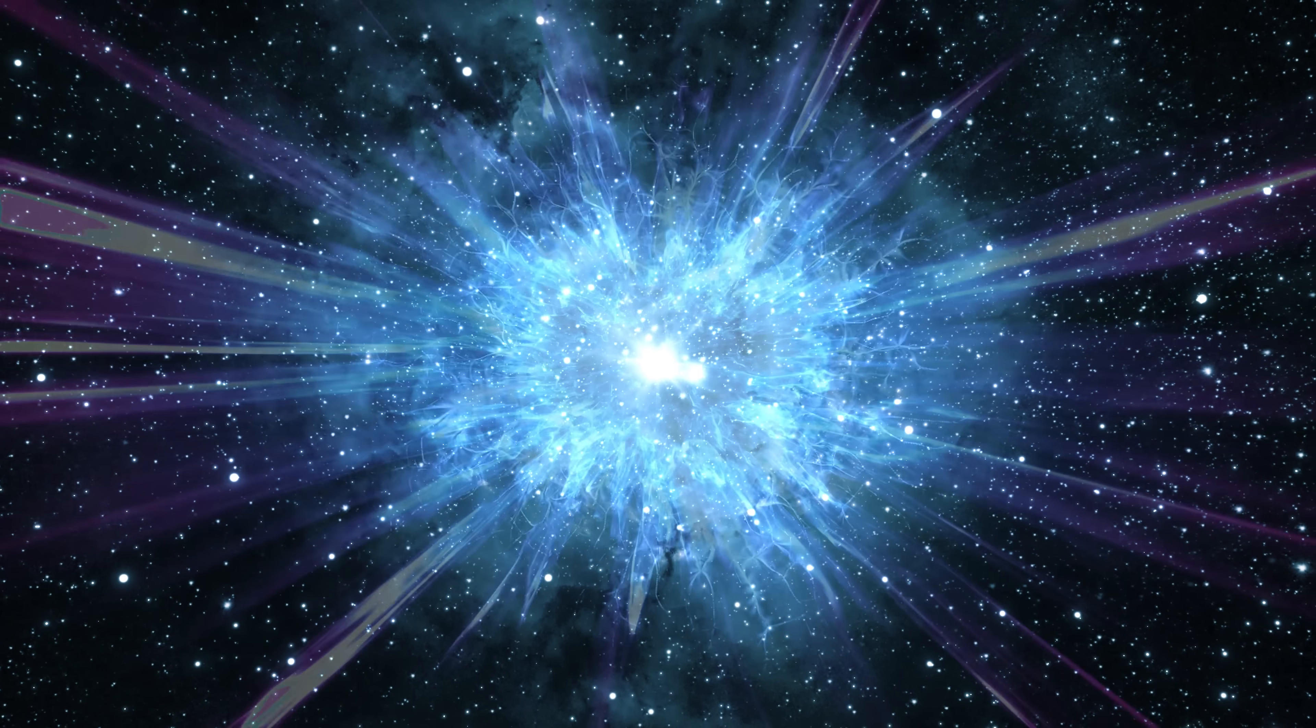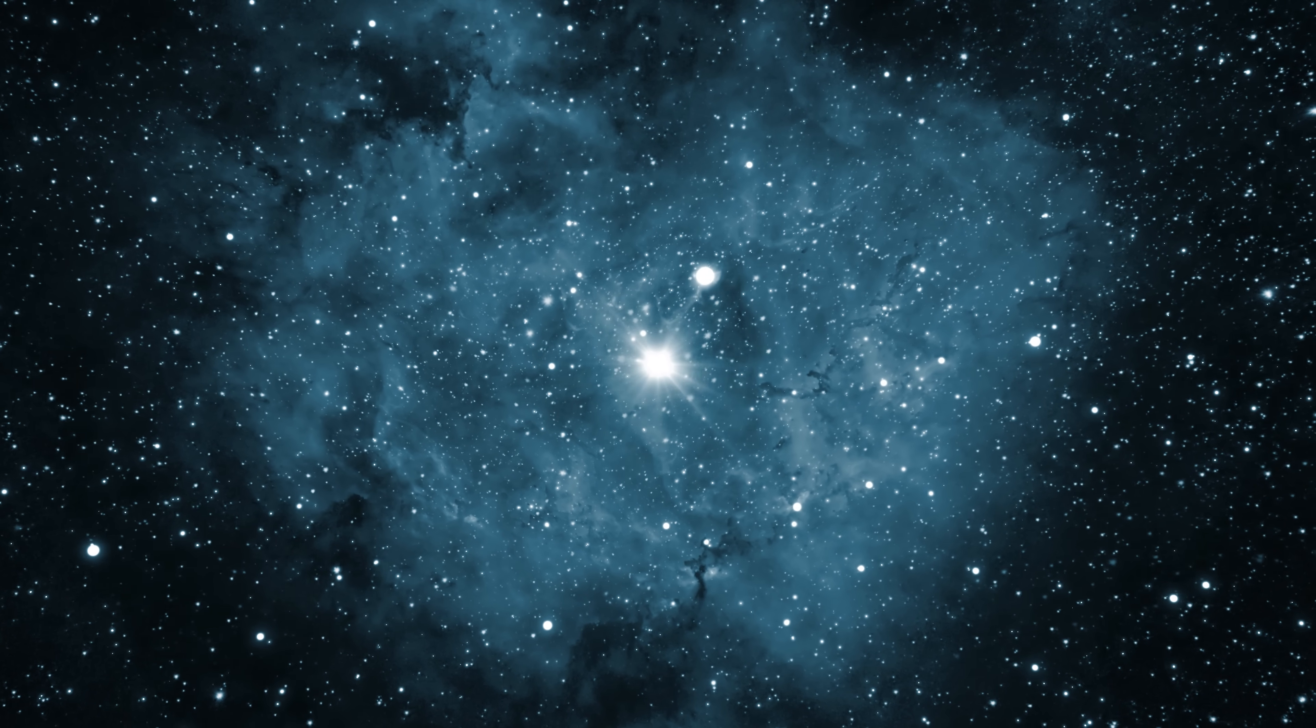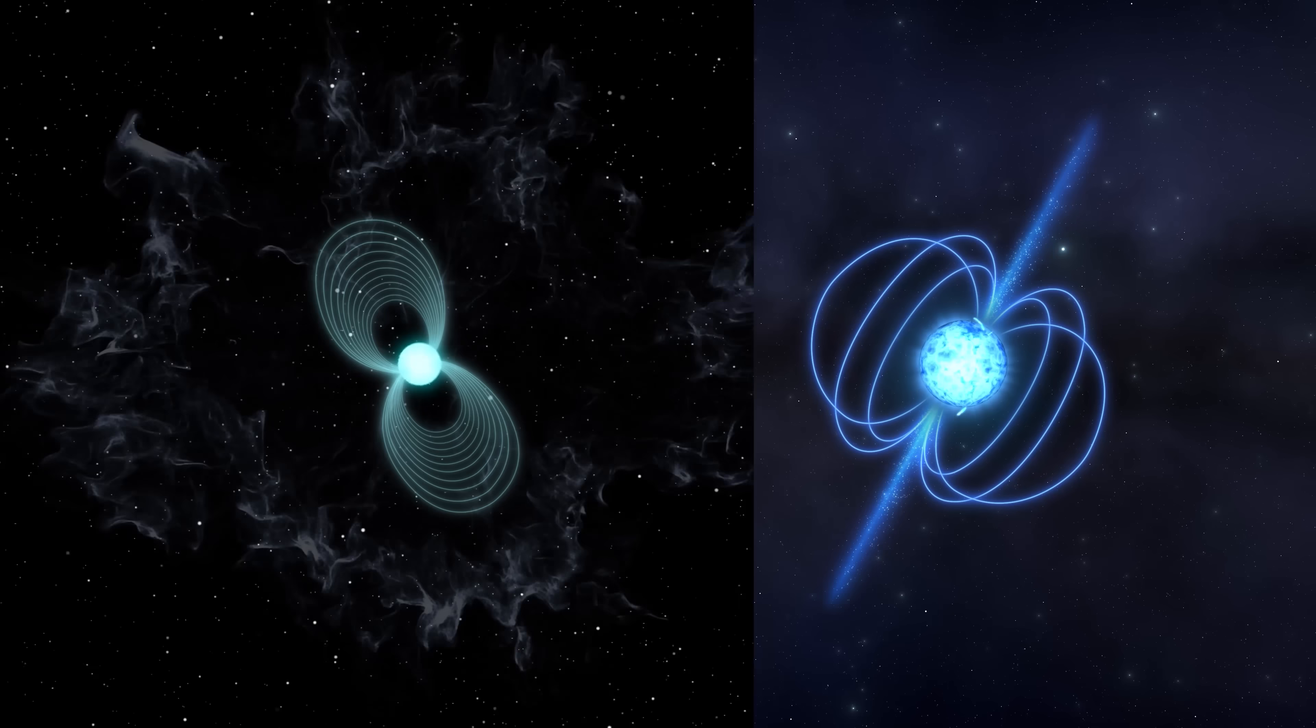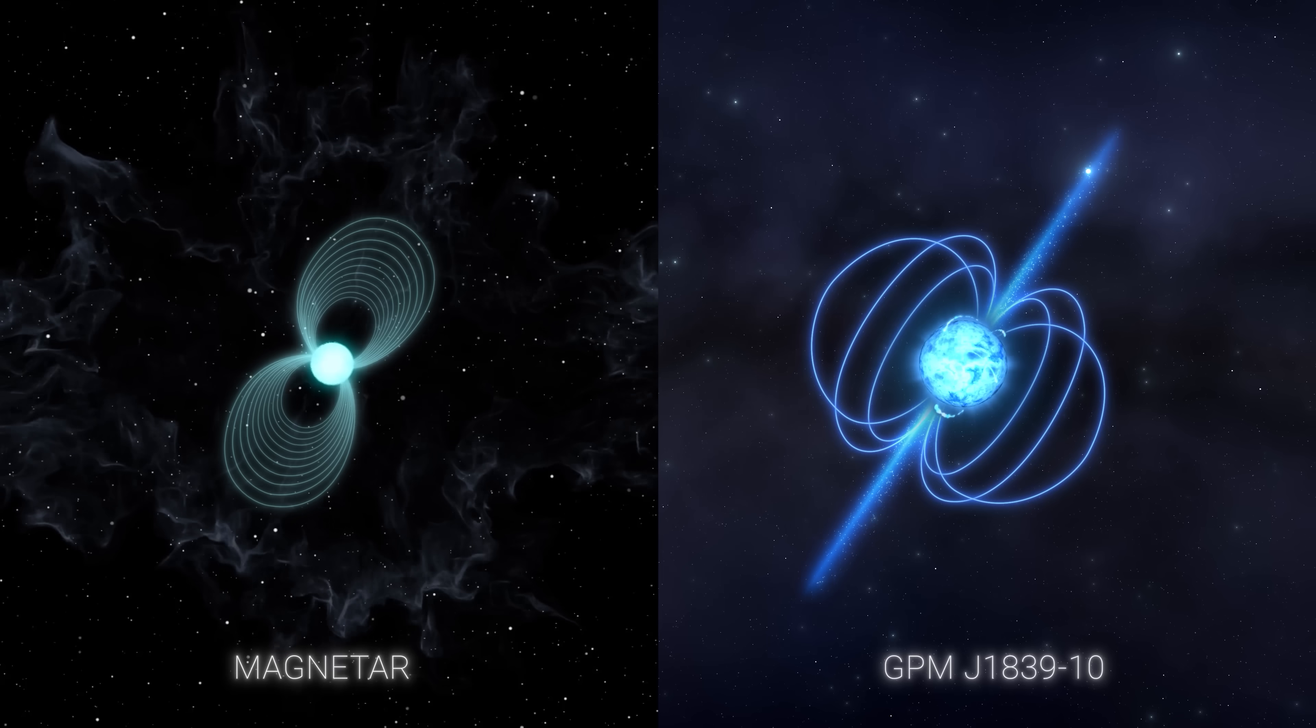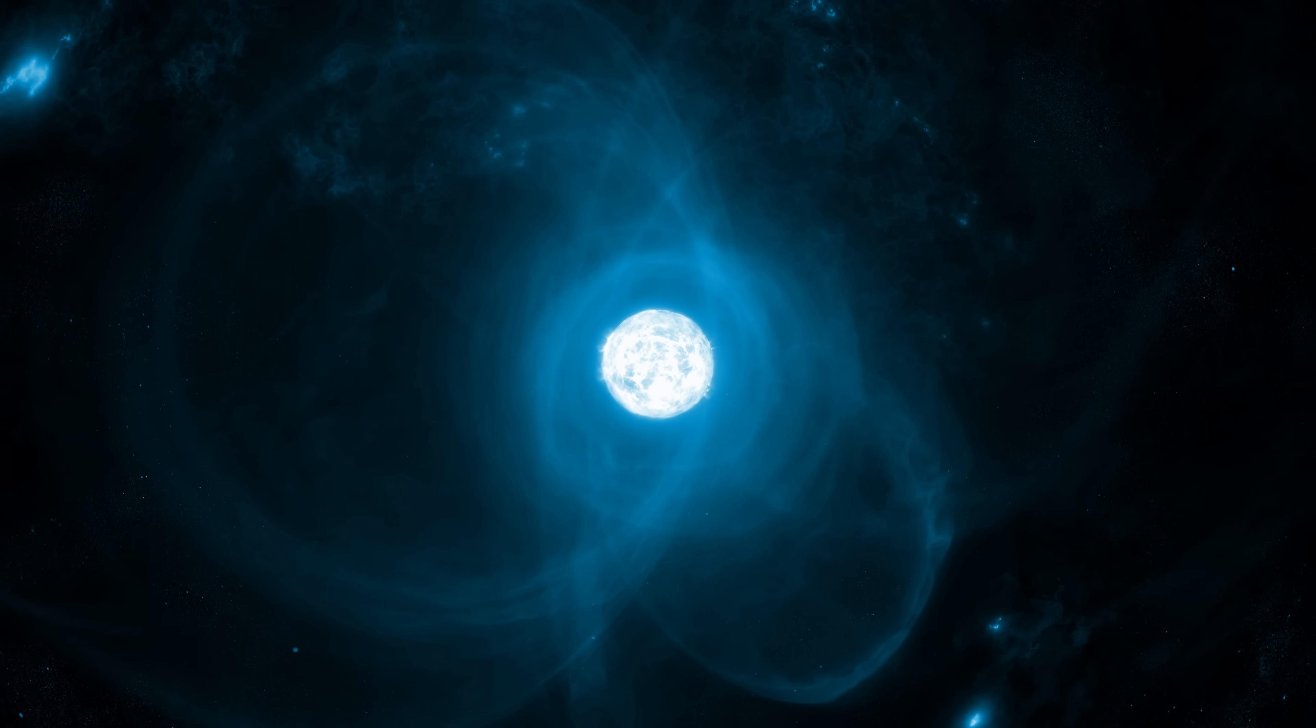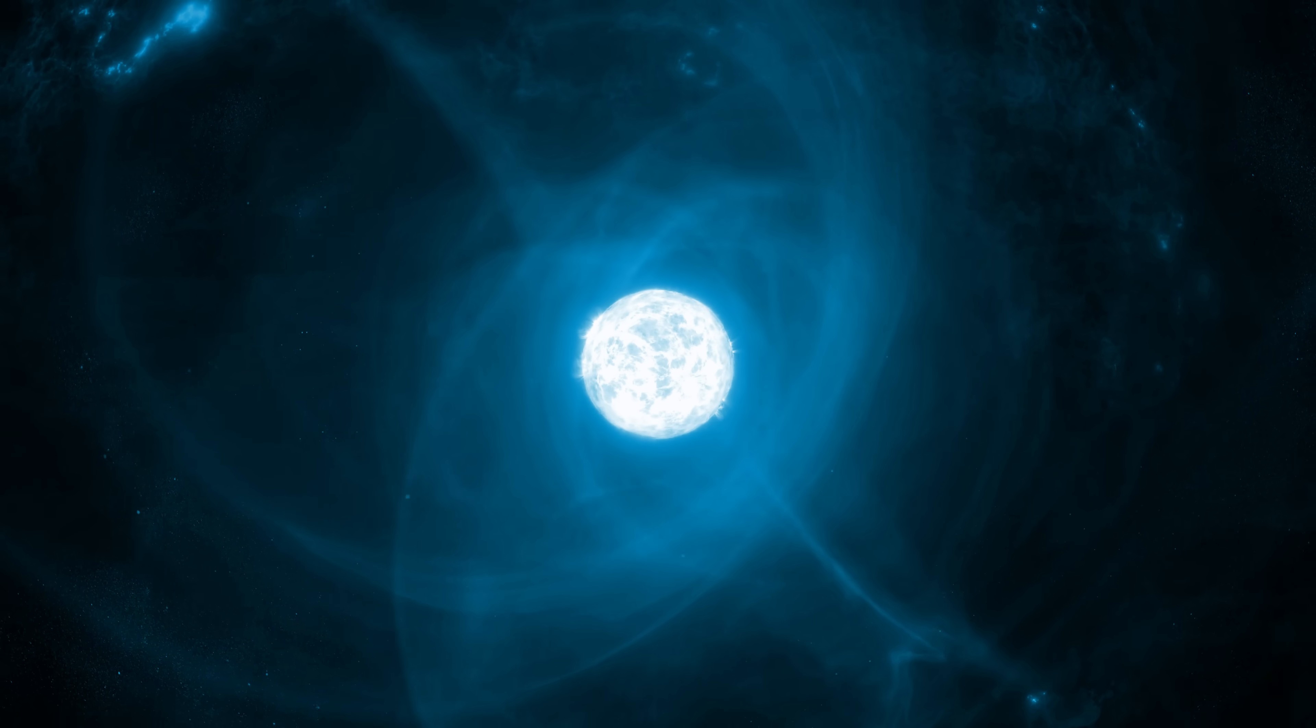Starbursts are sporadic events, and their emissions will not have this rhythmic, clock-like precision of GPM J1839-10. Moreover, starbursts tend to change the magnetar's rotation period and magnetic field with time, which is not consistent with the unwavering consistency of our enigmatic signal. Despite their bizarre and extreme properties, magnetars are not the key to solving the mystery of GPM J1839-10.